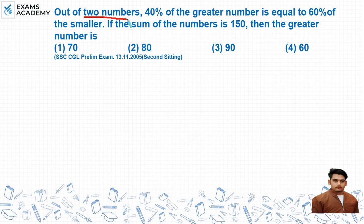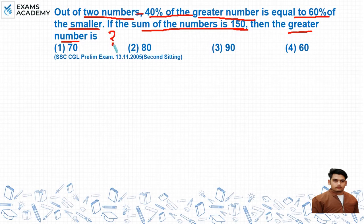The question is: out of two numbers, 40% of the greater number equals 60% of the smaller number. If the sum of the numbers is 150, then the greater number is how much?